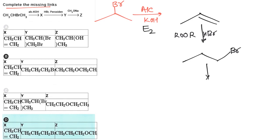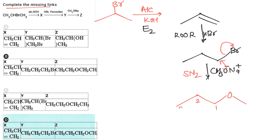Now 1-bromopropane reacts with CH3ONa. In this case, a primary alkyl halide is taken, and in the presence of a strong base and strong nucleophile, SN2 reaction takes place. After SN2 reaction we get an ether — 1-methoxypropane is formed as the final product. So step 1 gives alkene, step 2 gives 1-bromopropane, and step 3 gives methoxypropane. Hence the correct answer is D.